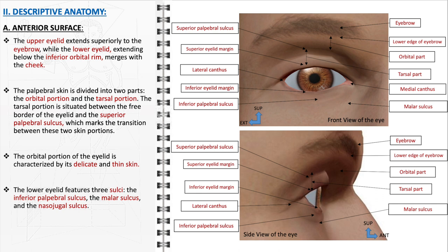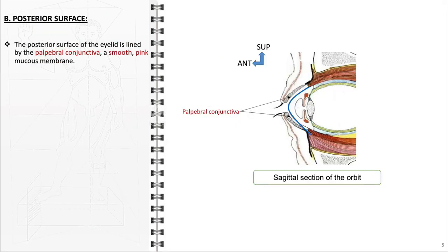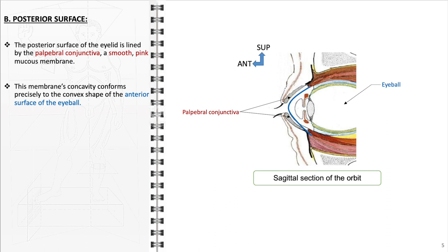In contrast, the lower eyelid is defined by three distinct sulci: the inferior palpebral sulcus, the malar sulcus, and the nasojugal sulcus, each contributing to the overall contour and aesthetic of the eyelid. The space between the upper and lower eyelids is termed the palpebral fissure, significant for vision, eye protection, and the aesthetics of the eye. The posterior surface of the eyelid is lined by the palpebral conjunctiva, a smooth pink mucous membrane crucial for eye lubrication, protection, and immune defense. Its concavity conforms precisely to the convex shape of the anterior surface of the eyeball, ensuring smooth eyelid movement and minimal friction.